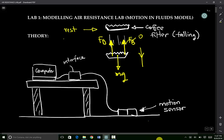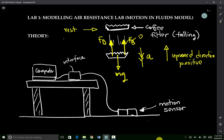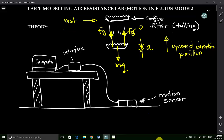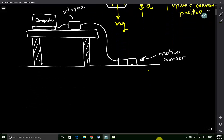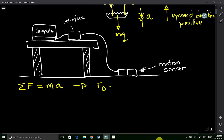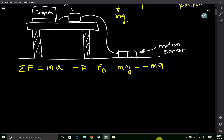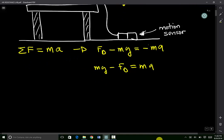We know that the direction of acceleration is downwards, but we are going to take the upward direction to be positive. This is the force diagram that illustrates all the forces acting on the coffee filter as it falls. We know from Newton's second law that the sum of all the forces acting on the system is equal to the mass of that system times the acceleration. This gives us: F_D minus mg equals negative mA, which we can rewrite as mg minus F_D equals mA. This is the equation of motion of the falling filter.